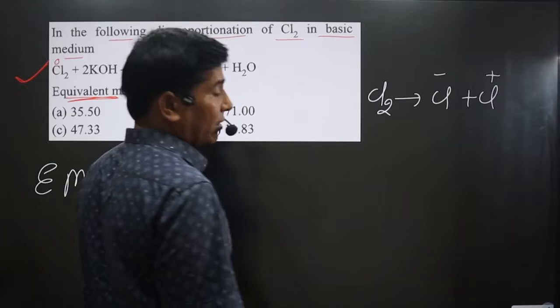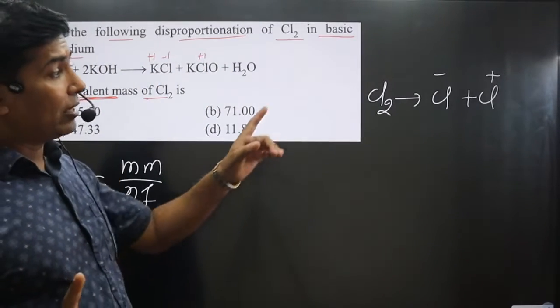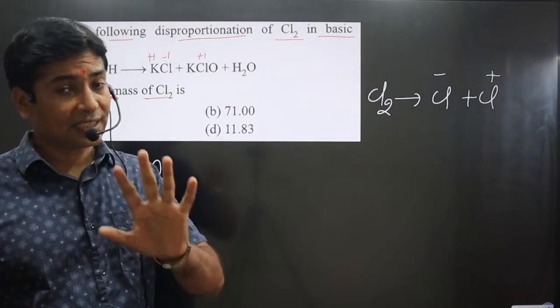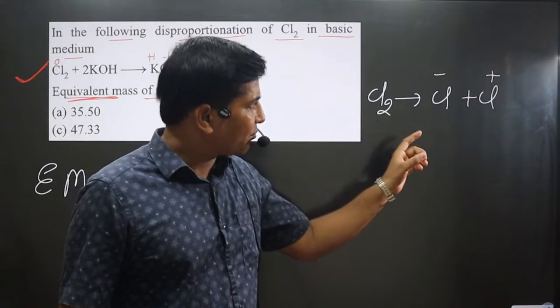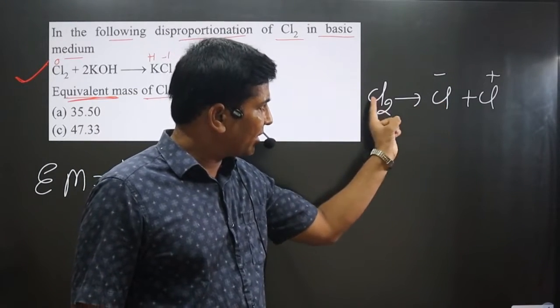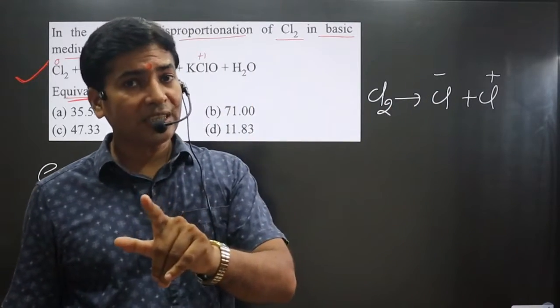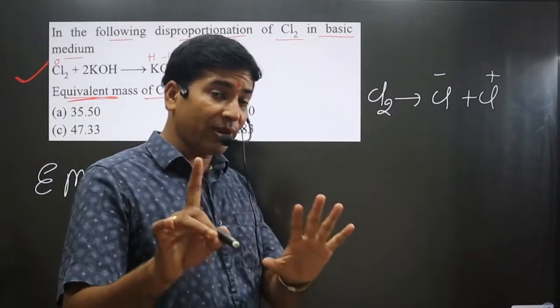Now balance the number of atoms before balancing the charge. Always keep in mind you cannot say number of Cl are balanced. If I have to find the difference in oxidation number between these 2 Cl you must balance the number of atoms. Pay attention very carefully.